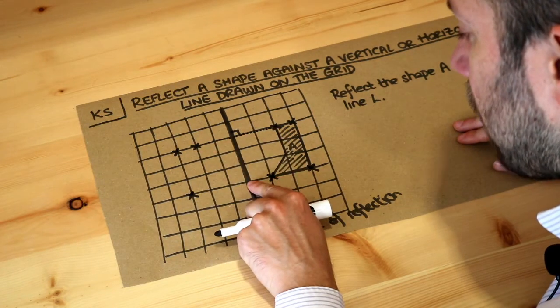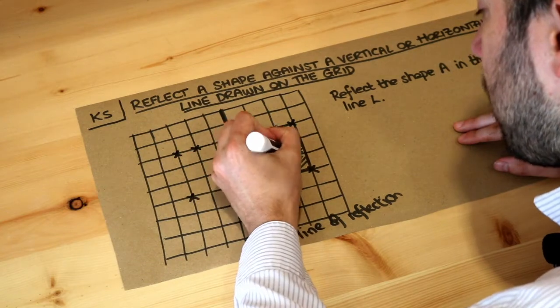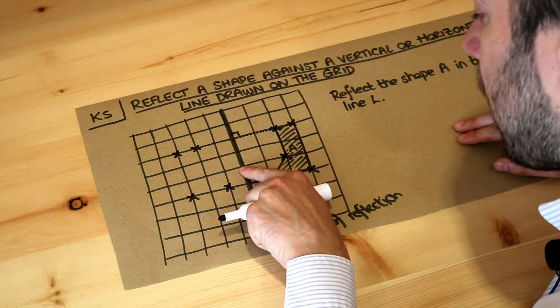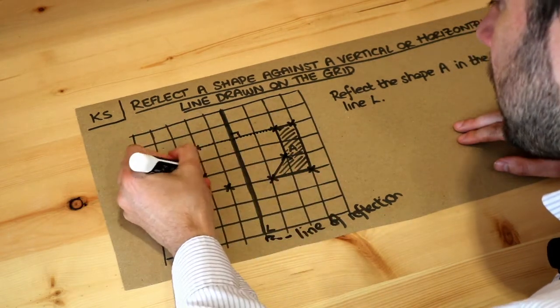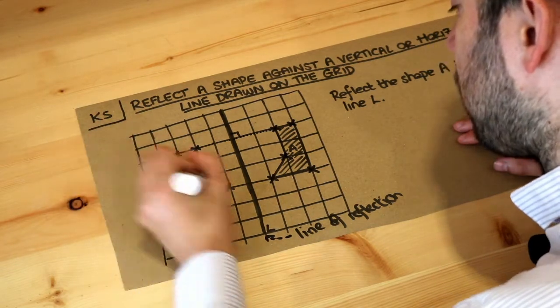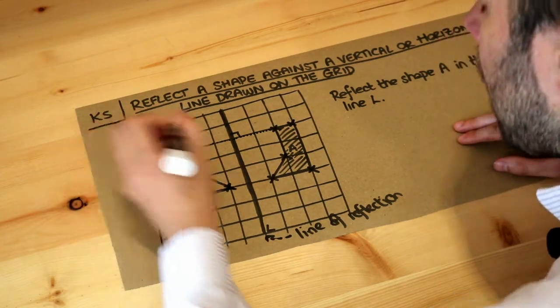So one square again is here and the last point is here, one two squares, one two squares, it's here. And now we can just join these up and we are done.